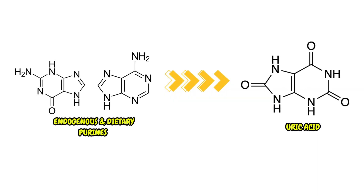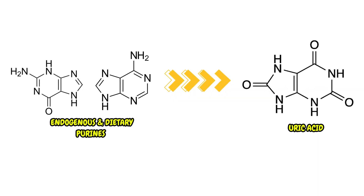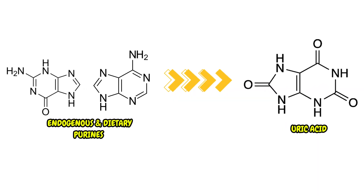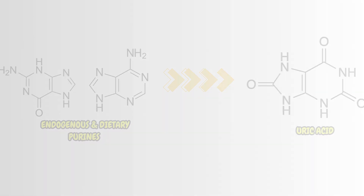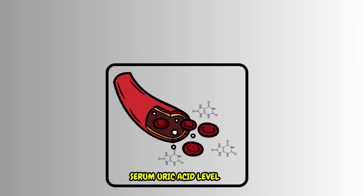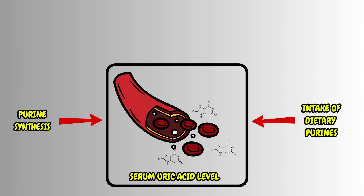Uric acid is the final product of endogenous and dietary purine metabolism in humans, and the level of serum uric acid depends on the balance between purine synthesis, intake of dietary purines, and the excretion of uric acid from the body.